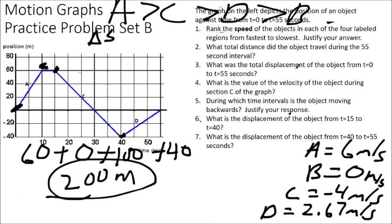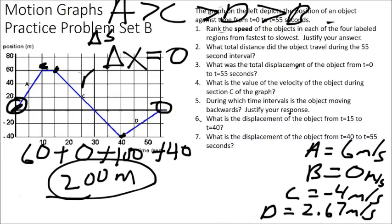Now question C asks for total displacement. Displacement is delta X — change in position. It's a vector, so direction matters. Our object started at position 0 and ended at position 0. Even though it was moving, it started and ended at the same position, meaning its change in position is zero. Delta X equals final position minus initial position: 0 minus 0 equals 0 meters.